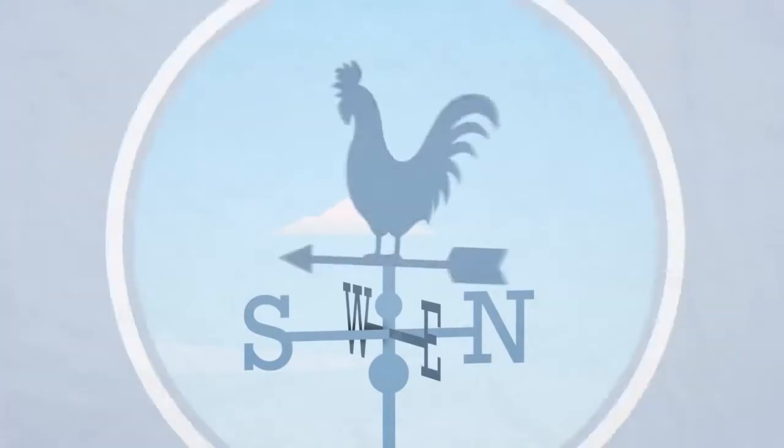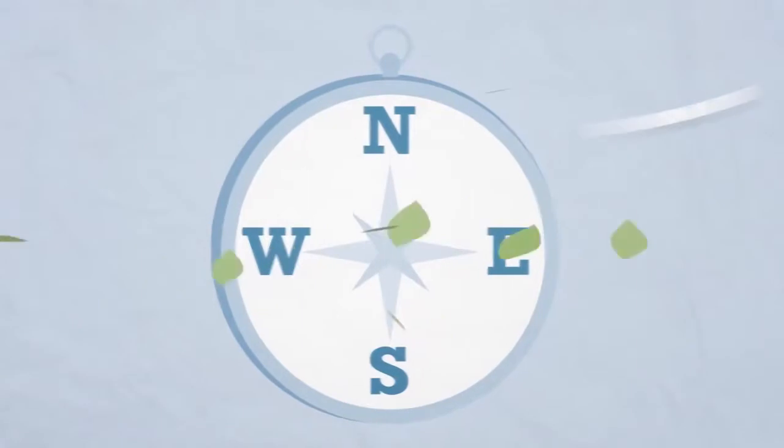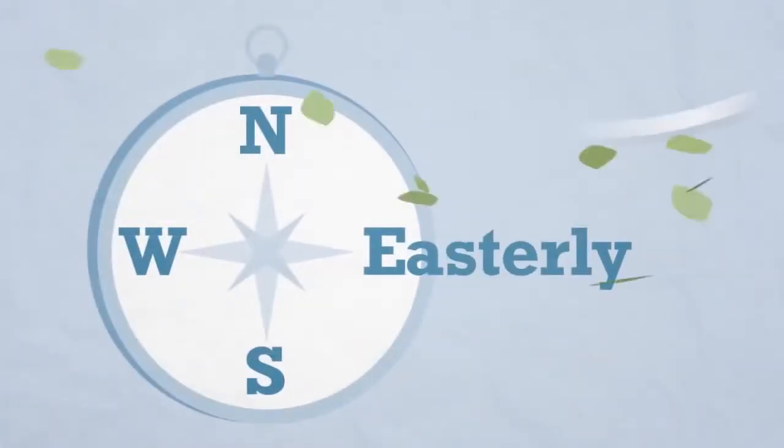For describing wind direction we use compass points: north, east, south, and west. Wind direction is the direction wind is blowing from, not where it is blowing to. Therefore, if wind comes from the east we call it an easterly wind.